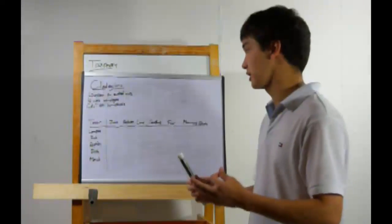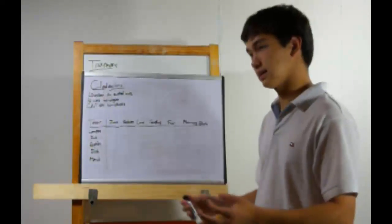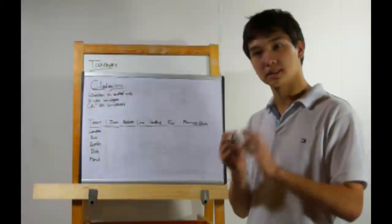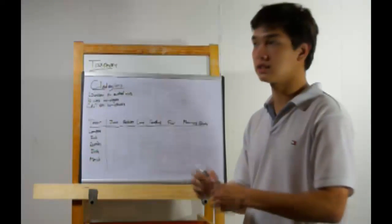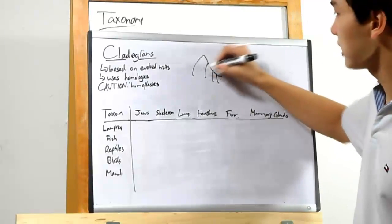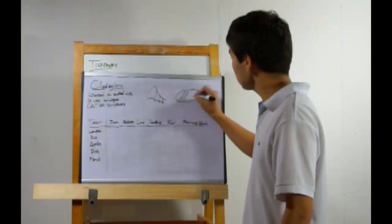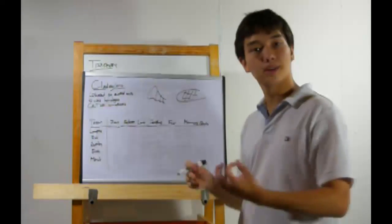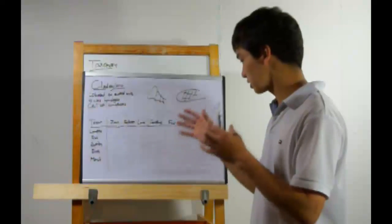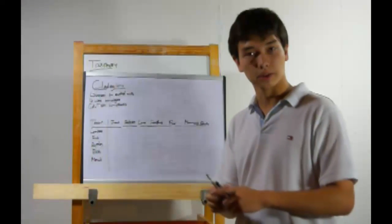Cladograms show evolutionary divergence, and they use things called homologies — similar traits, similar growth, similar structures. Do not confuse these with homoplasies. Homoplasies are similar structures that perform similar functions but are created differently. Take, for instance, the bat wing — it is used for flying, but it is made mostly of muscle. Compare this to the insect wing, which is made of almost no muscle at all, but is also used for flying. That's a homoplasy: same structure, same function, made out of different stuff. Don't use those.